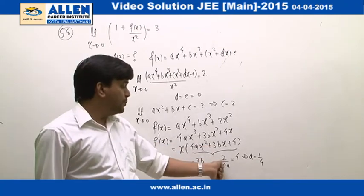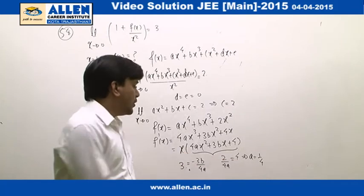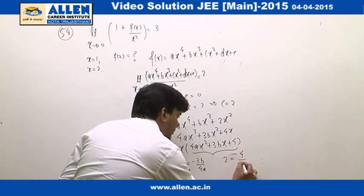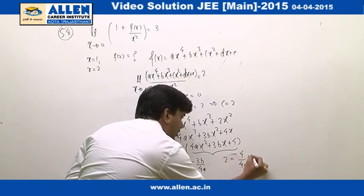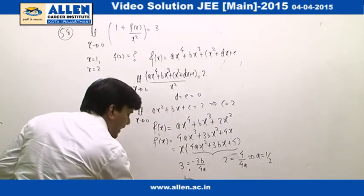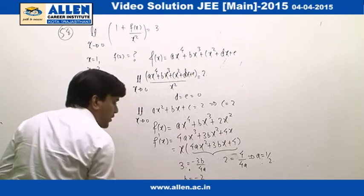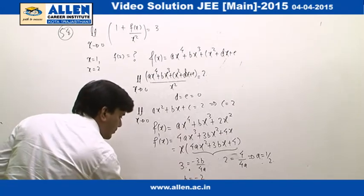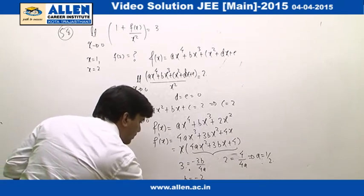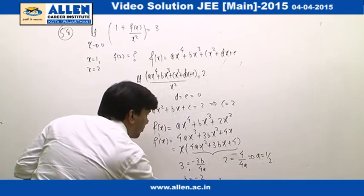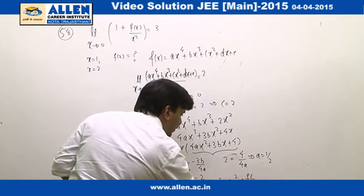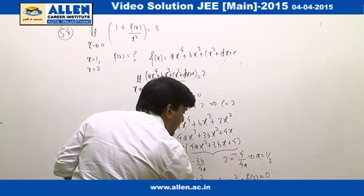The product of the roots is 1×2 = 2, which equals 4c/(4a) = 2/a, giving a = 1/2. Substituting a = 1/2 gives b = -2. So f(x) = x⁴/2 - 2x³ + 2x². This gives f(2) = 8/2 - 16 + 8 = 0, wait — the answer is 1.